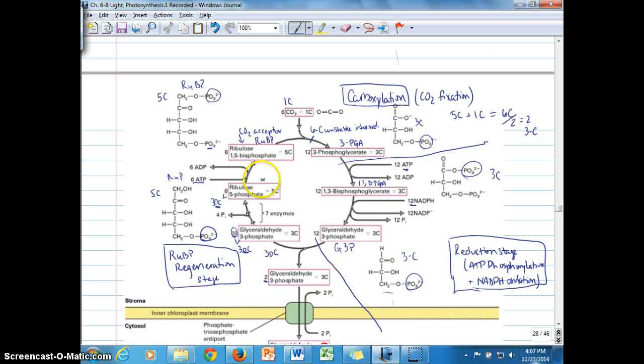So the regeneration stage does consume ATP molecules. In fact, it consumes half the number of ATP molecules as the reduction stage. We end up with six ribulose 1,5-bisphosphates, or basically the same number of RUBPs as CO2 molecules that enter the cycle.